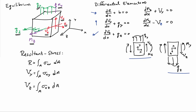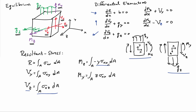We also have the connection to stresses through integration over the cross-section. Integrating the normal stress sigma_xx over the area gives the axial force R. Integrating shear stress in the y-direction gives V_y, and in the z-direction gives V_z — that's new for multi-axis bending. The moment about the z-axis is the integral of sigma_xx times (minus y) dA. The moment about the y-axis is the integral of sigma_xx times z dA — because for a differential area element dA, the force is sigma_xx dA and the lever arm to the y-axis is the distance z.